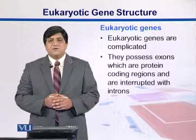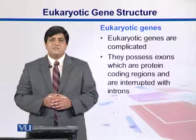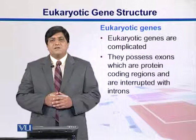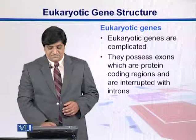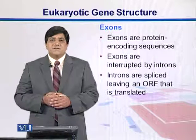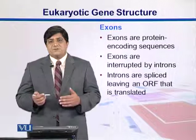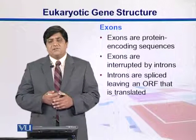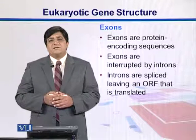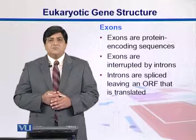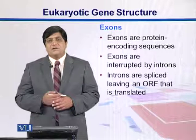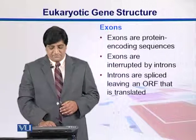In this section we will talk about eukaryotic genes. Eukaryotic genes are relatively complicated — not as simple as prokaryotic genes. In eukaryotes, the genes have exons and introns. Exons are protein-coding regions, spaced from one another, with introns in between them. During gene expression, both exons and introns are first transcribed into messenger RNA, and then the introns are removed. The remaining structure is called the ORF.